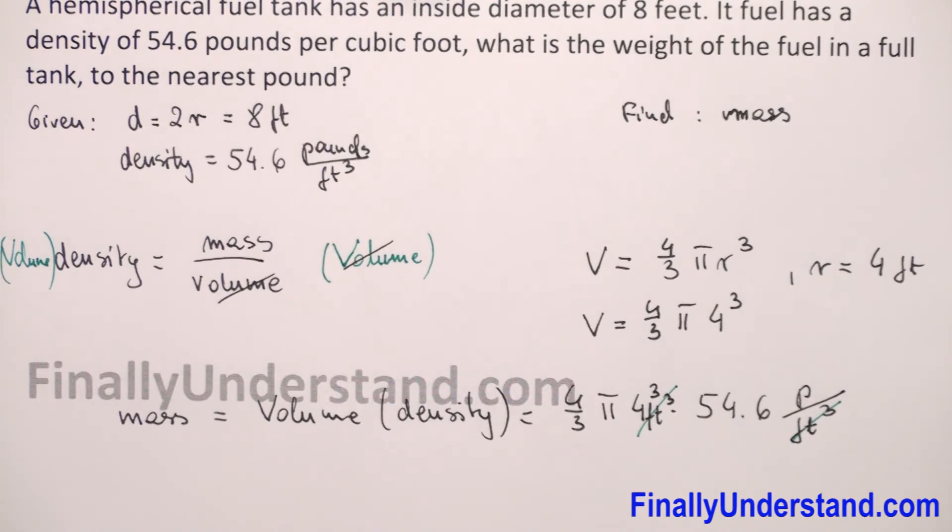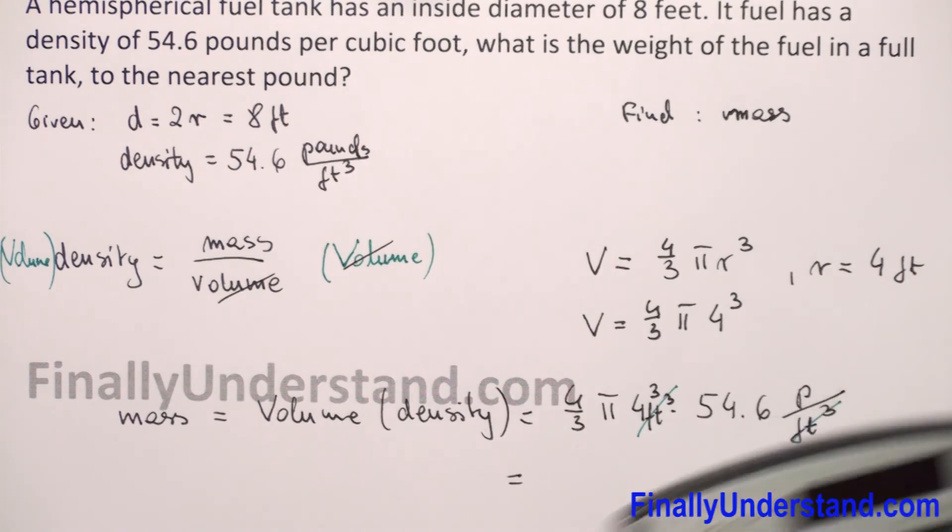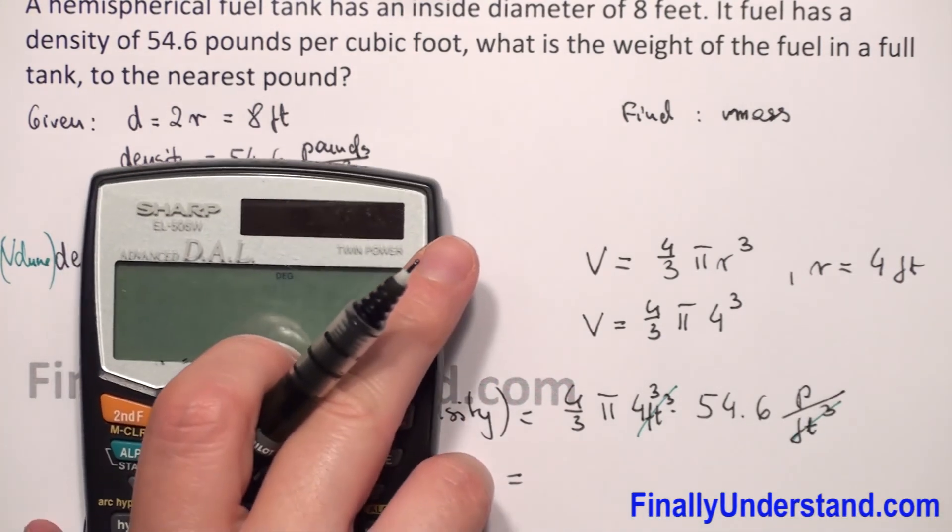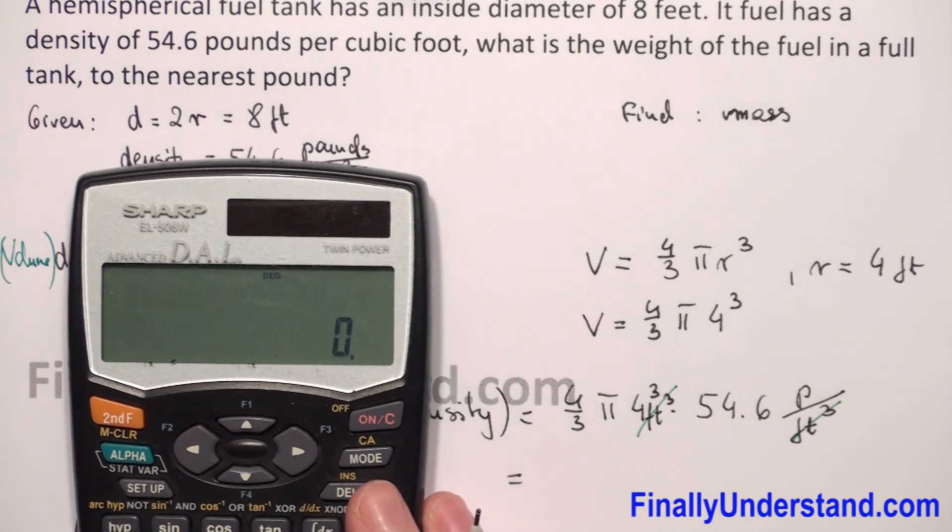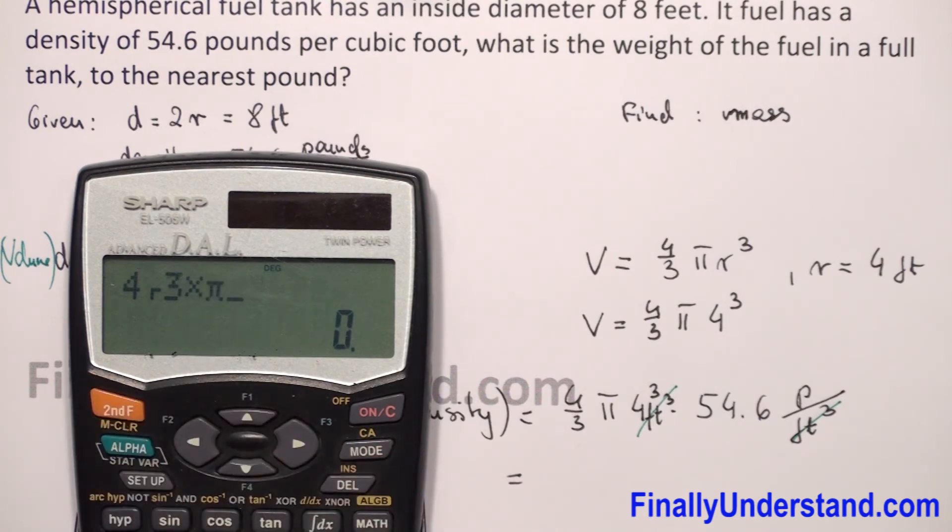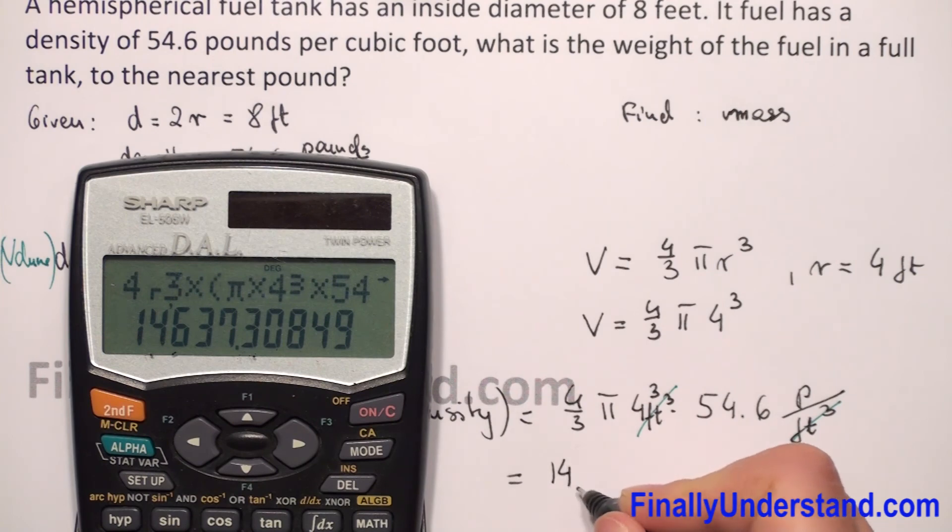We'll use a calculator. We have 4 over 3 times pi times 4 to the 3rd power times 54.6. This equals 14,637.